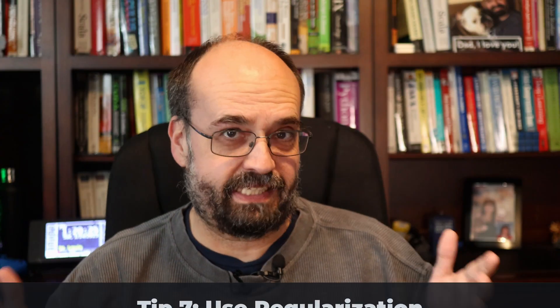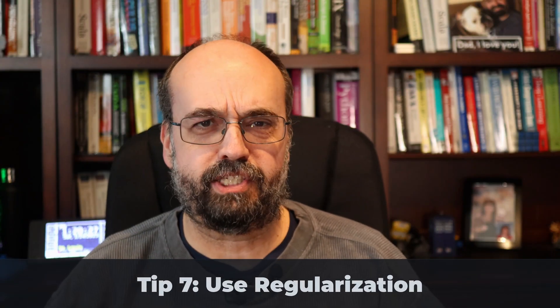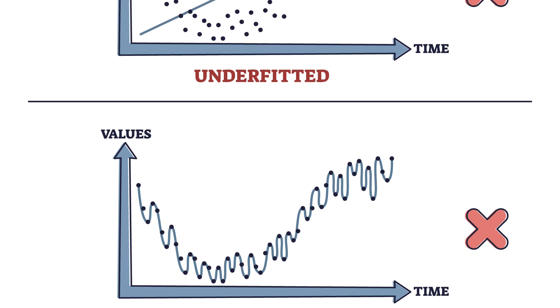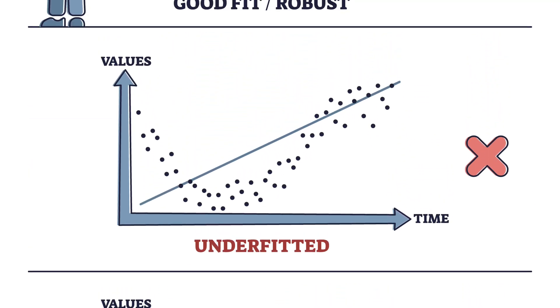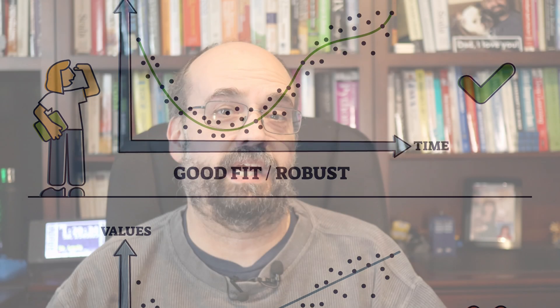Tip 7: Use regularization to prevent overfitting. Overfitting occurs when a model is too complex and memorizes the training data instead of generalizing to new examples.